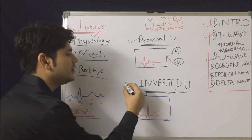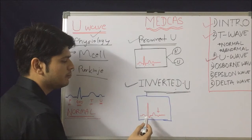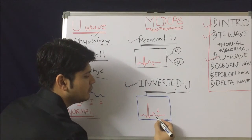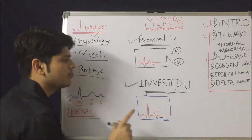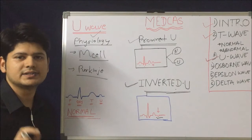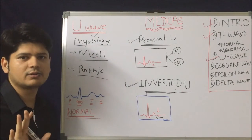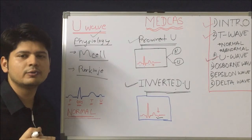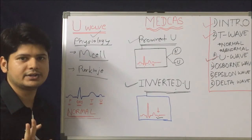Now we understand the inverted U wave. You can see in this complex: P wave, QRS, T, and then the inverted U wave. Inverted U wave is a very good clue to coronary artery disease. Inverted U wave is never a normal phenomenon — if a patient's ECG has an inverted U wave, it suggests the patient may have coronary artery disease.